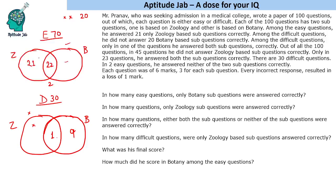We know there are 70 easy questions. Using the condition that 45 questions had zoology not answered correctly, and we already have 27 outside zoology from easy and 9 from difficult (total 36), we need 9 more, giving 27 plus 18 equals 45. From this, the only-botany value in difficult is 11, since 9 is already placed and the two values add to 20. All conditions are now fulfilled and placed in the Venn diagram.